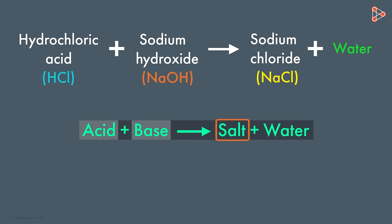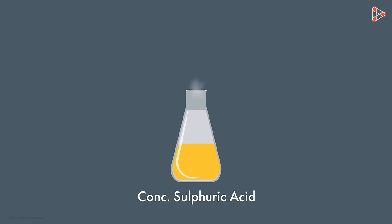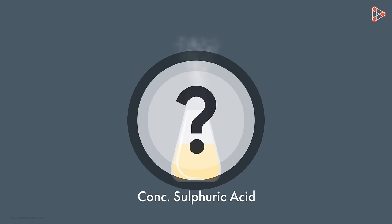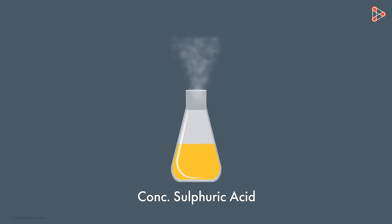But now tell me one thing. How do we understand whether a compound is acidic or basic? Can we taste it every time? If we are given a solution of concentrated sulphuric acid, how are we supposed to know its nature? It's not possible to bear even a drop of it on your skin. So, tasting the solution is just out of the question. So now, how do we say that this is an acidic solution? There has to be a way to figure it out.